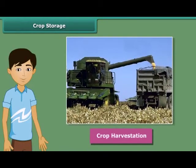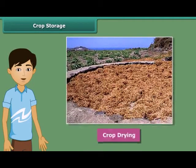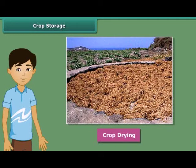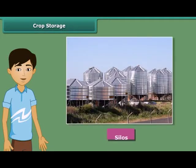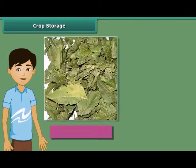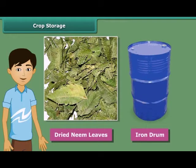Once harvesting is done, crops are stored in huge storages. If harvested grains are stored without drying, they may get spoiled or attacked by organisms and lose their germination capacity. So grains should be properly dried in the sun to reduce moisture. Farmers store grains in jute bags or metallic bins, but for large-scale storage they use silos and granaries. People also keep dried neem leaves in iron drums for storing food grains, as these protect the grains from pests and microorganisms.